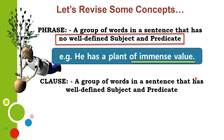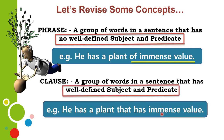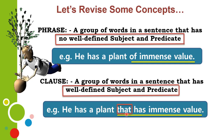Take a look at the next one: Clause. A group of words in a sentence that has a well-defined subject and predicate. Example: 'He has a plant that has immense value.' Now 'that has immense value' is underlined. The word 'that' stands for the word 'plant' — it is a relative pronoun, hence it is the subject. 'Has immense value' starts with a verb, so it is the predicate. Thus we have revised the concept of phrase and a clause.